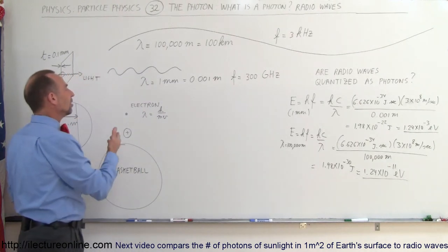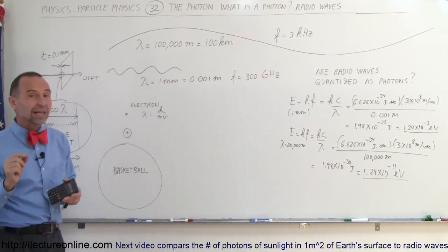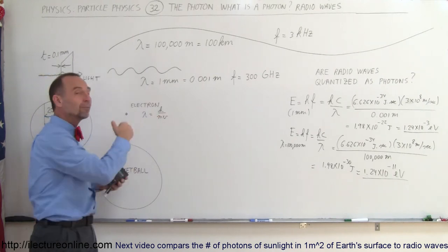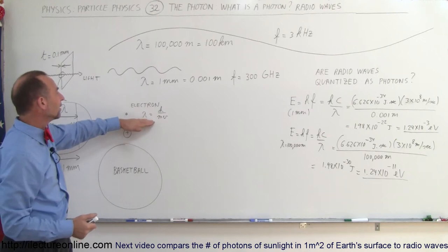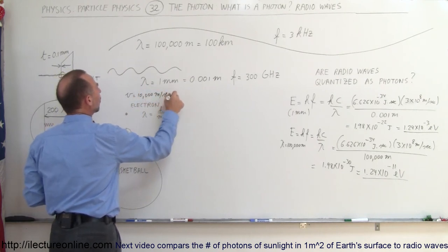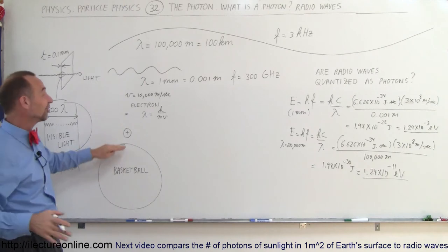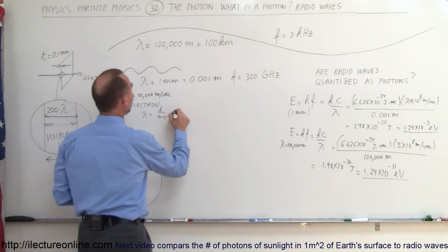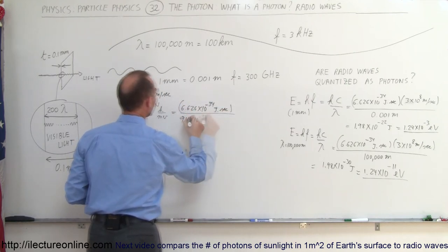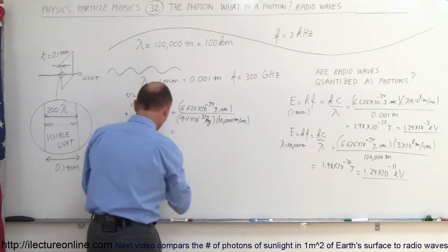A way to think about it is to consider the other side of the coin: we know that particles behave like waves, especially very small particles like electrons. We can actually calculate the wavelength of those small particles using de Broglie's relation. Let's say a particle moves at a velocity of 10,000 meters per second. Let's calculate the wavelength for an electron moving at that speed, then a proton, and eventually a basketball — adjusting the basketball's speed since 10,000 m/s would be unrealistic. The wavelength of an electron equals Planck's constant divided by mass times velocity: λ = h/mv.